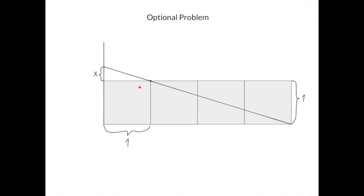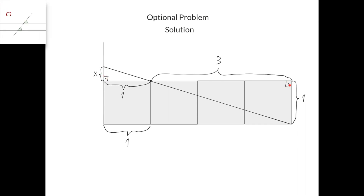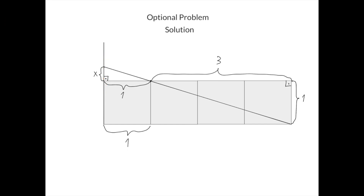Here's the optional problem. We have four squares arranged in a row, each with side length 1. We draw a line starting from one corner, passing through a specific point, and it intersects another line at a point. This length is X, and we need to find what X is. We know that this length here is 3 and this length here is 1. This length is 1, this length is X, and both angles are 90 degrees. We know that this line is parallel to this line, so we can apply the intercept theorem. The intercept theorem tells us that the ratios of the sides of the two triangles are equal. Since this over this is 1 over 3, the ratio between this side and this side is 1 to 3. And so X over 1 equals 1 over 3, or X equals one third.